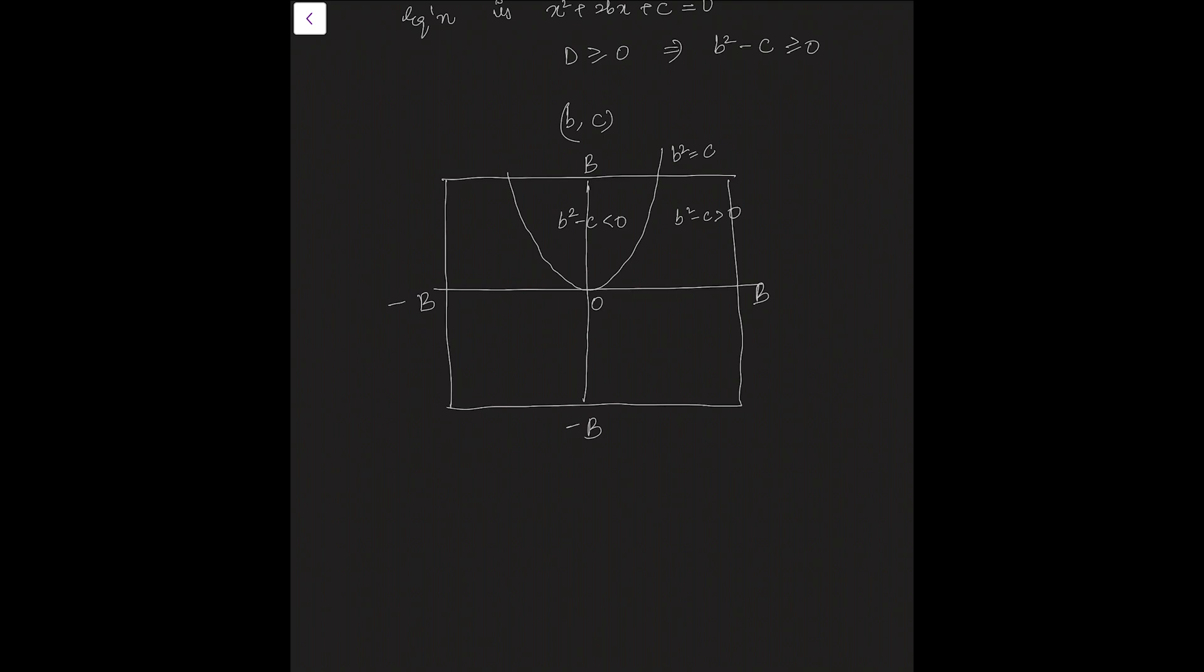So, we have to find the probability for real roots. First we will find the area of the shaded region divided by the total area of the square that is 4b squared will give us the probability for real roots.